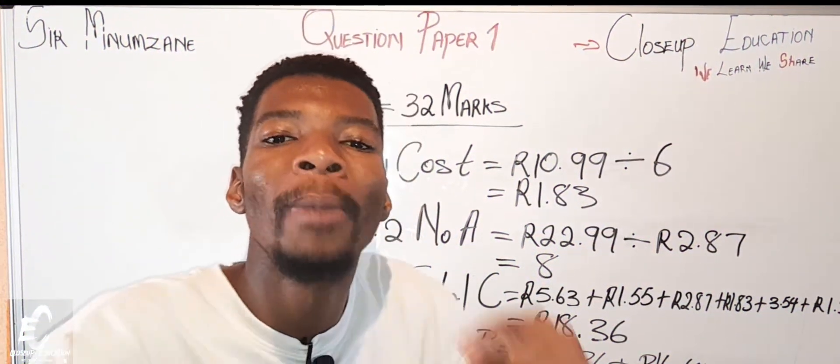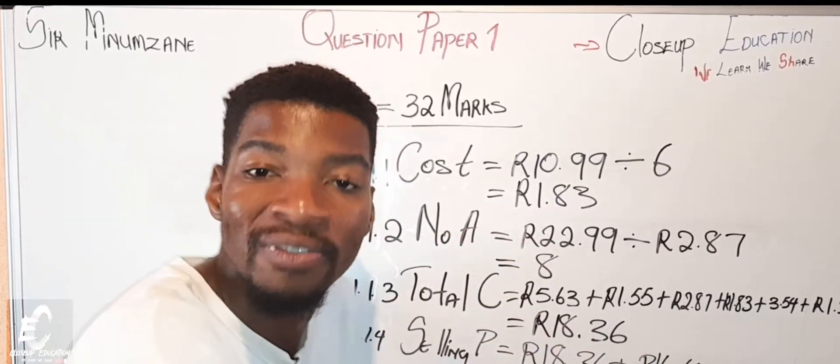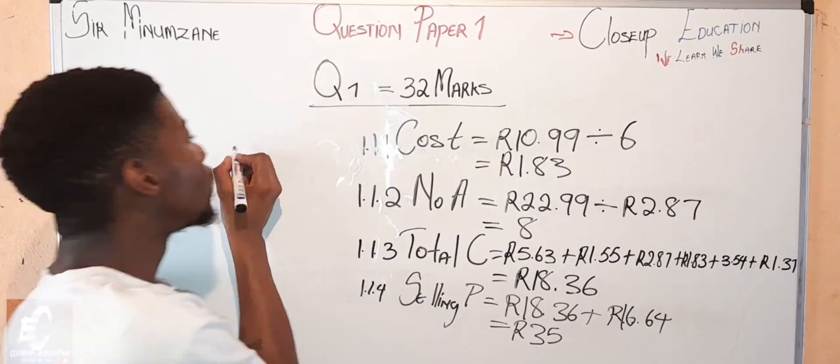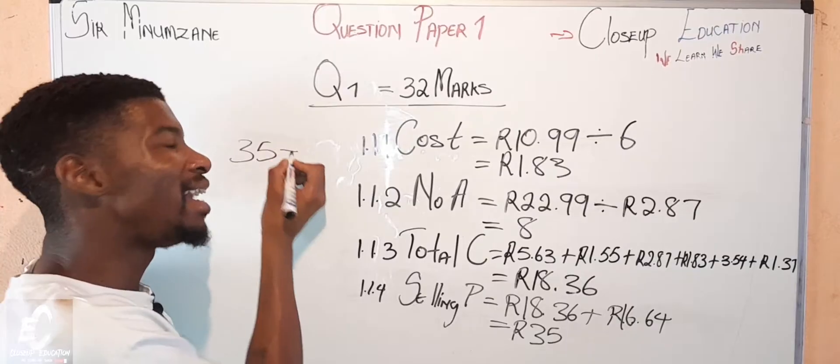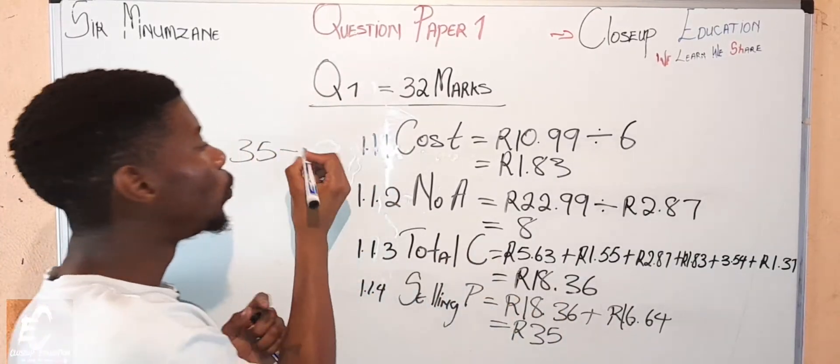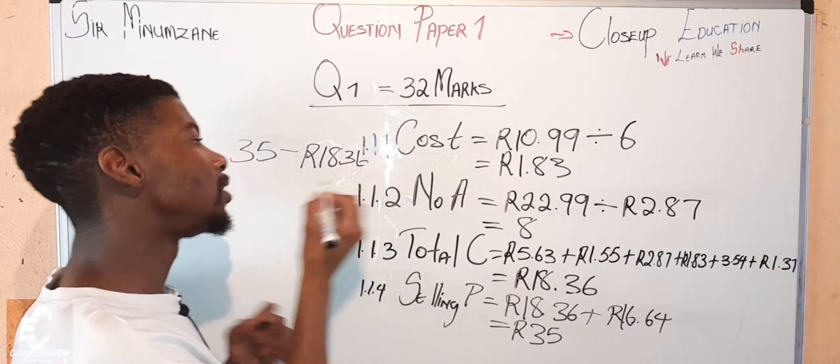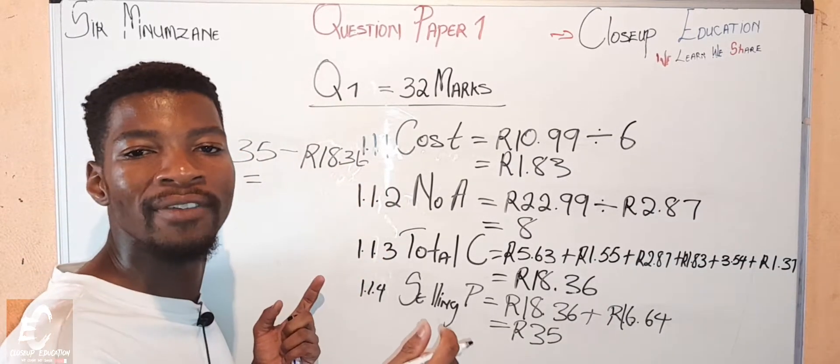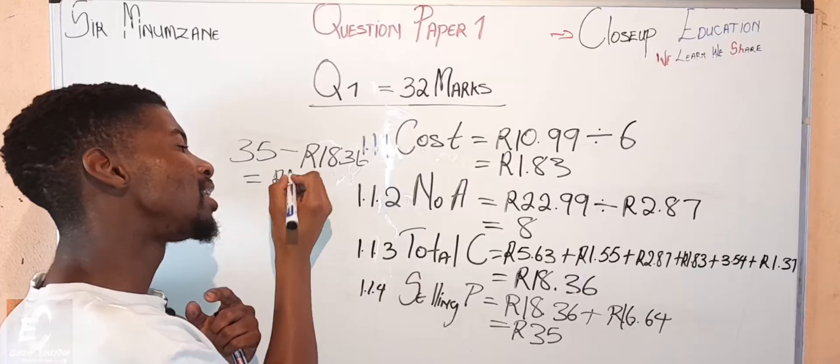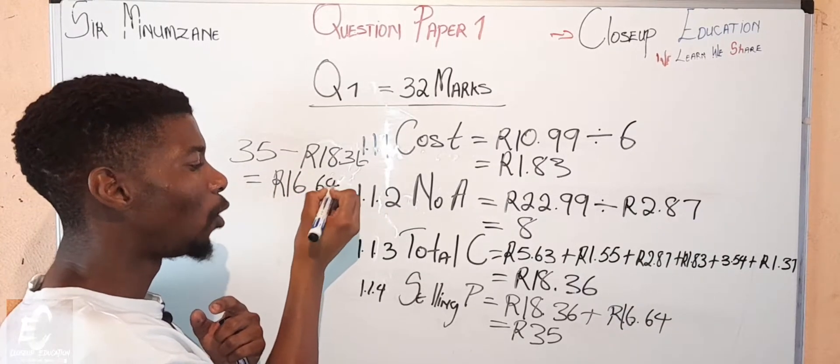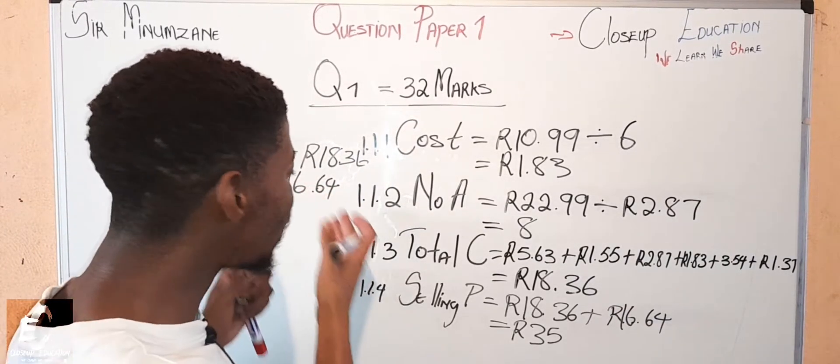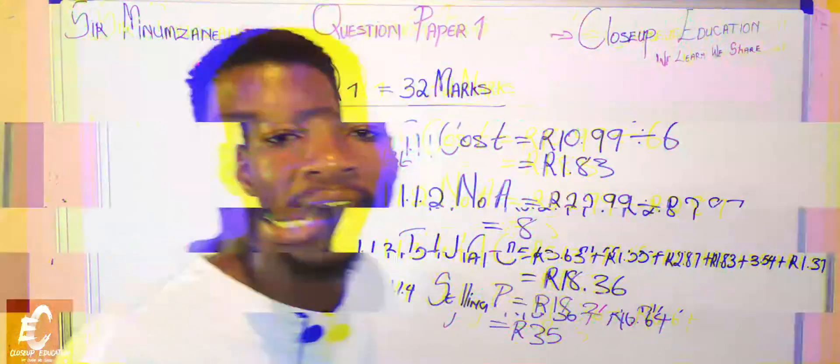You might ask yourself how is this so easy? You might obviously try to confirm if the answer is right by doing this: saying 35 minus the total cost which is 18 rands comma 36 cents equals to - it has to give us the profit which is 16 rands comma 64 cents. Now we know that the answer it is definitely correct.